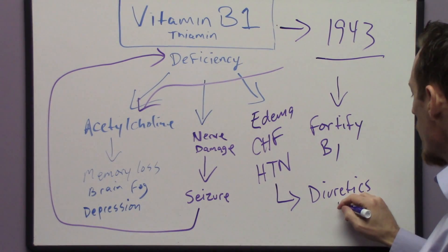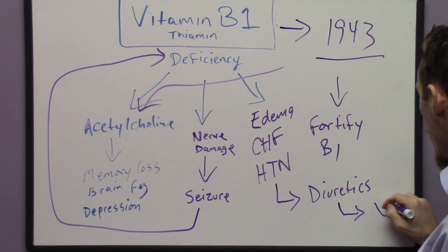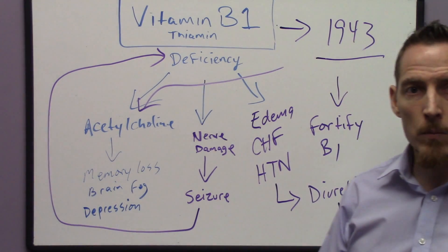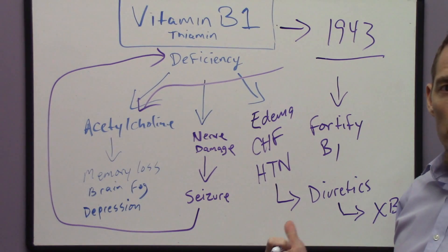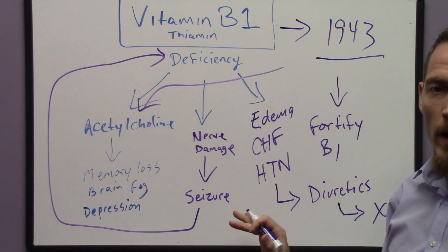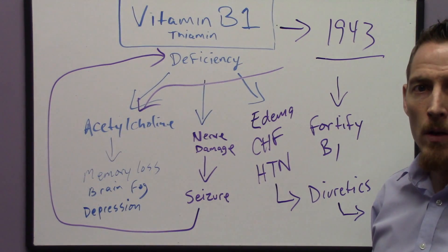The problem with diuretics is they actually block vitamin B1's ability to get into heart cells. There's been a number of studies that shows that vitamin B1 deficiency is very prominent in patients who have a long history of diuretic use.